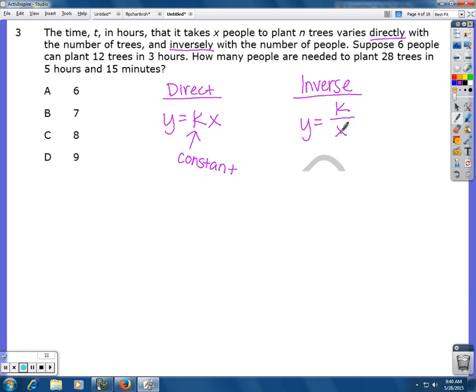Normally, problems deal with either direct or inverse variation. However, in this case, you're dealing both with direct and indirect. So we're actually going to combine these two equations. And when you do that, this is called compound variation.